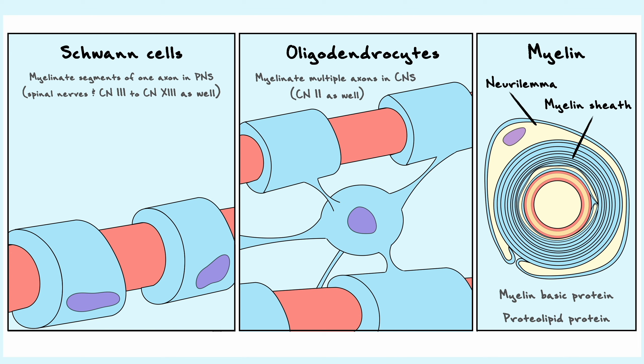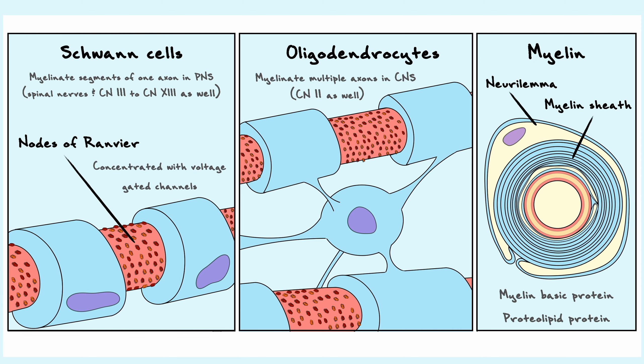Between each myelin segment, you will notice that there are bits of axons that are free. These free segments are known as nodes of Ranvier, and these nodes are very important because they are concentrated with voltage-gated channels.